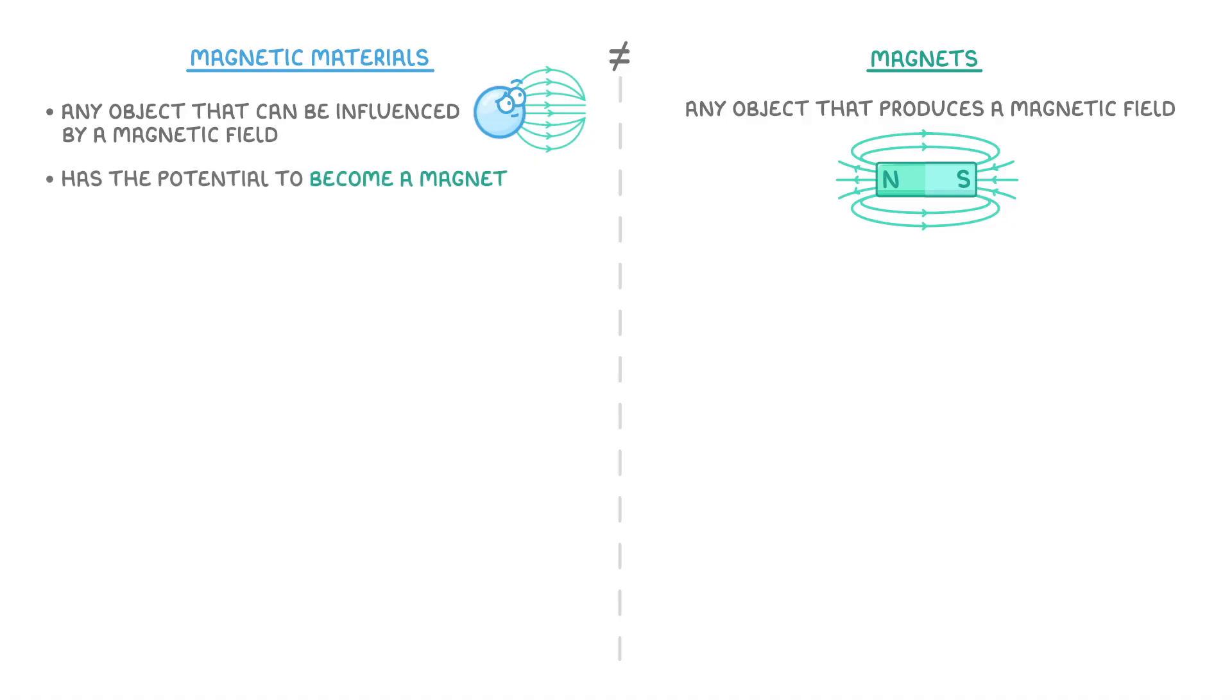When we talk about which elements are magnetic, we're often referring to which ones are magnetic materials, not necessarily magnets. For example, even though nickel is a magnetic material, only some pieces of nickel will actually be magnets.